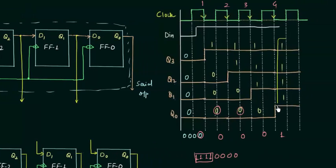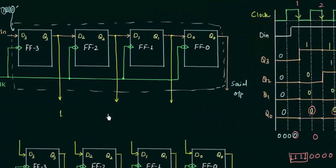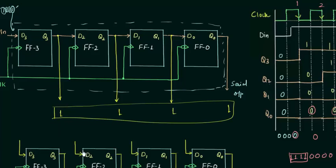Once we have stored the data we want - for example 1, 1, 1, 0, 1 - and once we are at that point, what is the value of Q3? Q3 is 1, Q2 is 1, Q1 is 1, Q0 is 1. So you can see we have our stored data as the output as soon as we pass the 4th clock pulse. Definitely we don't require more clock pulses to have this data out of the IC. This is the advantage of serial input parallel output.